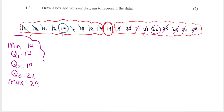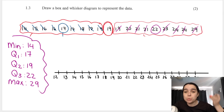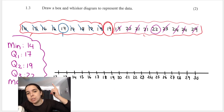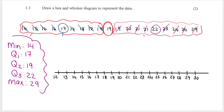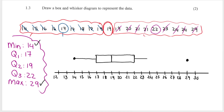It's these five numbers that we transfer onto the box and whisker diagram. When you draw a box and whisker diagram, you need a scale at the bottom. I made my scale go up in units of one, but that's not necessary. Your minimum of 14 is represented with a dot, and your maximum of 29 also with a dot. Then Q1, Q2, and Q3 are represented with vertical lines. Q1 is 17, Q2 is 19, Q3 is 22. Complete the box by joining up these lines — use a ruler so it looks neater.